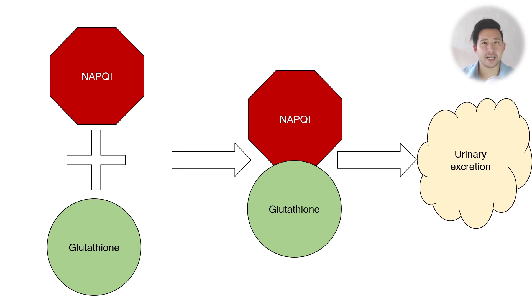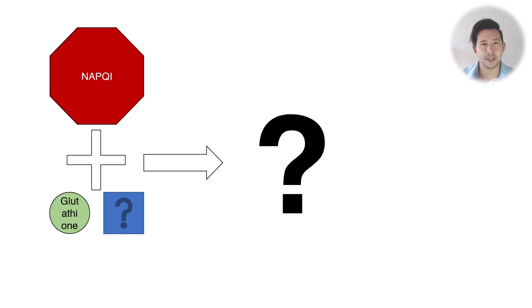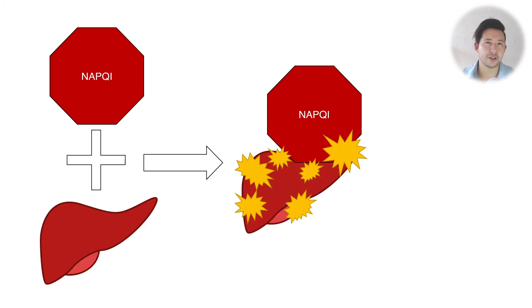NAPQI is then conjugated with glutathione in the liver, which makes a harmless conjugate that can be excreted in the urine. But what happens when you start to deplete your stores of glutathione? Once you get down to about 30 percent of your remaining glutathione stores in the liver, what does the NAPQI bind to then?